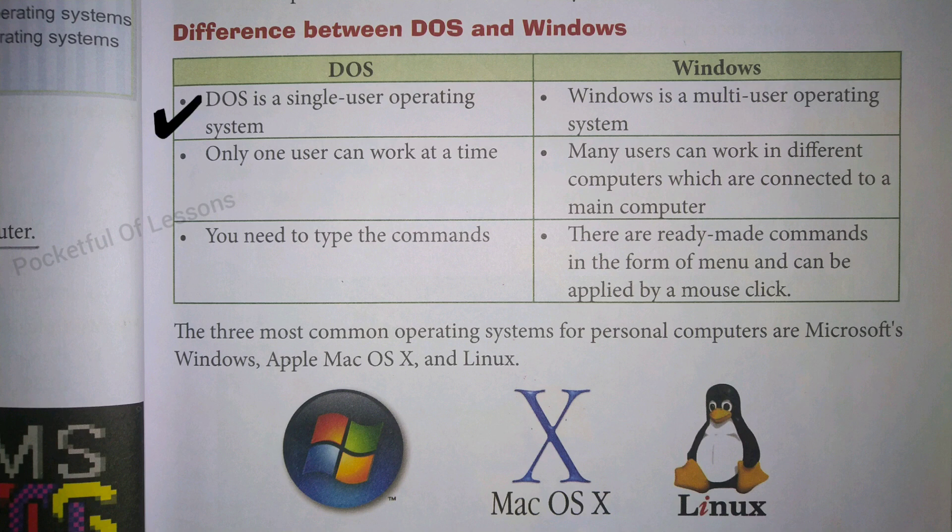First, DOS is a single user operating system. Means DOS works only on one computer or one system. On the other side, Windows is a multi-user operating system. Means when Windows is installed, it can work on more than one computer.